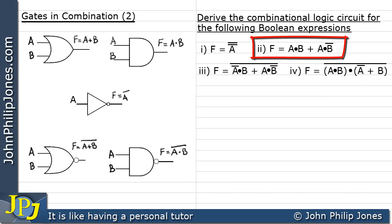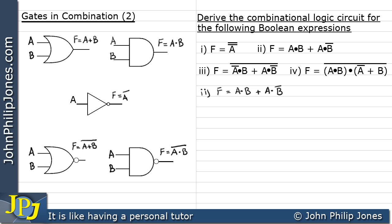Let's have a look at this Boolean expression and see if we can reproduce it with a combinational logic circuit. F is equal to (A AND B) OR (A AND NOT B). What's important is that we build up the logic circuit a little bit at a time. I'm going to look at the sub-expression A AND B and ask what gate would give me this. The answer has to be an AND gate.